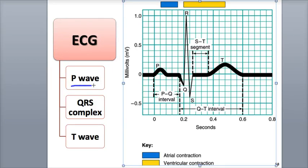They are the P wave, the QRS complex, and the T wave. Each wave represents a depolarization event, which stimulates contraction, or a repolarization event, which stimulates relaxation.